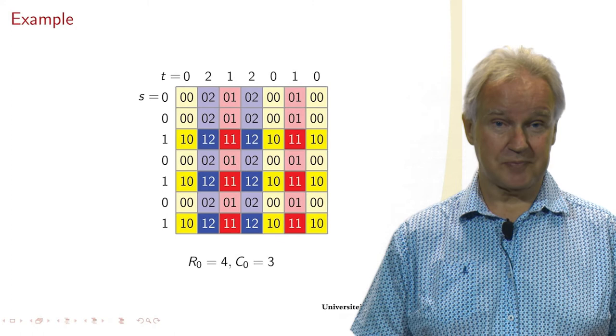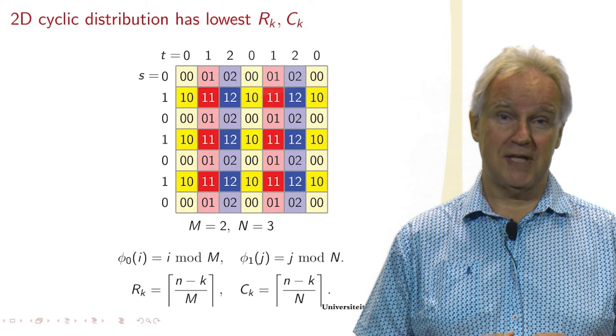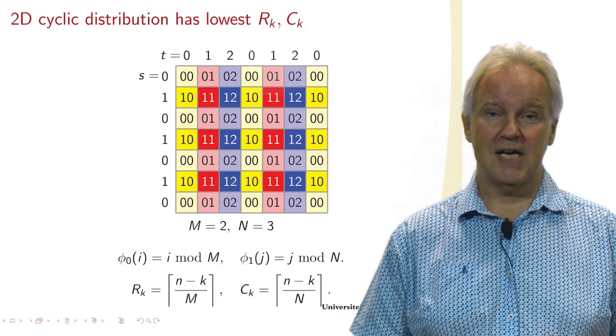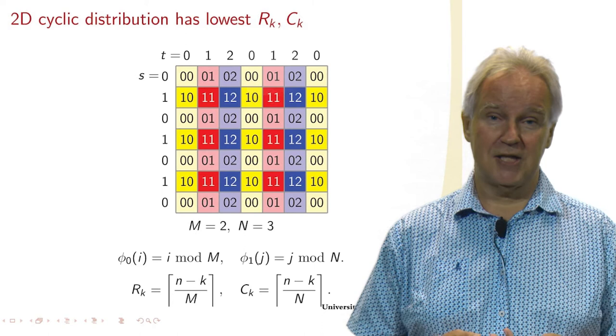Now a cyclic distribution, which we have seen already for vectors, but a cyclic distribution we can also use for matrices, then has a very good cost, a very low cost, because R_K equals N minus K divided by M rounded up.